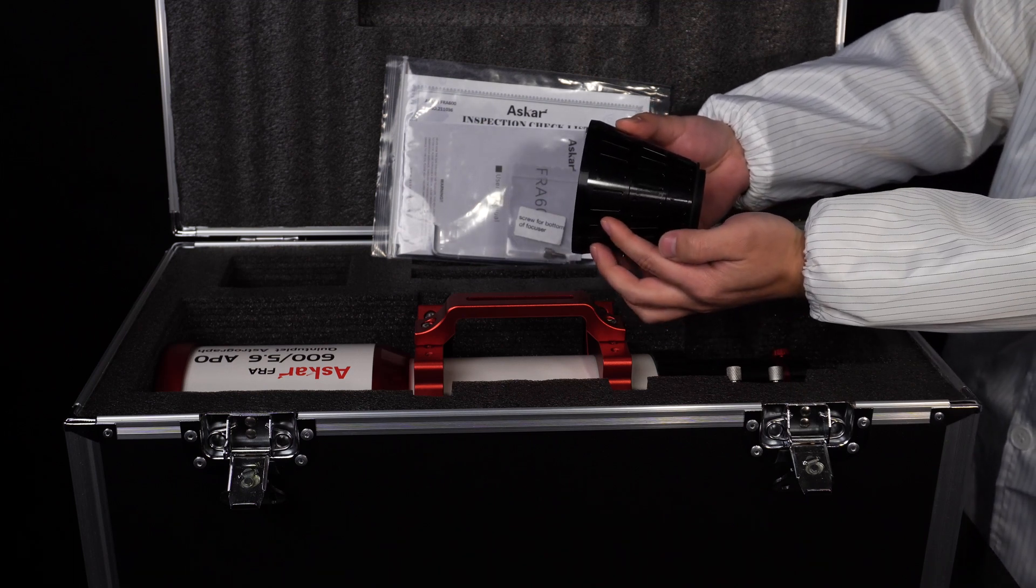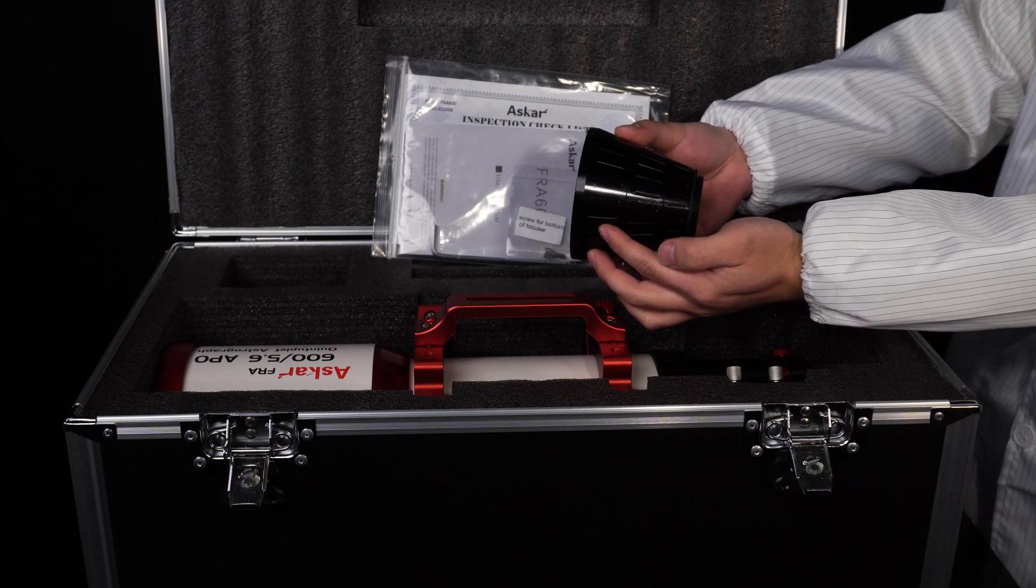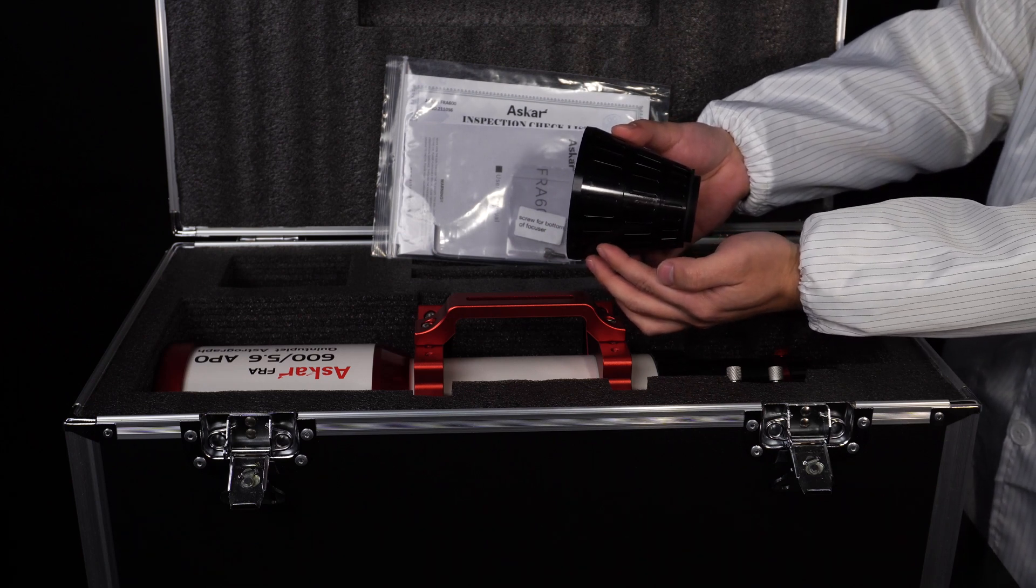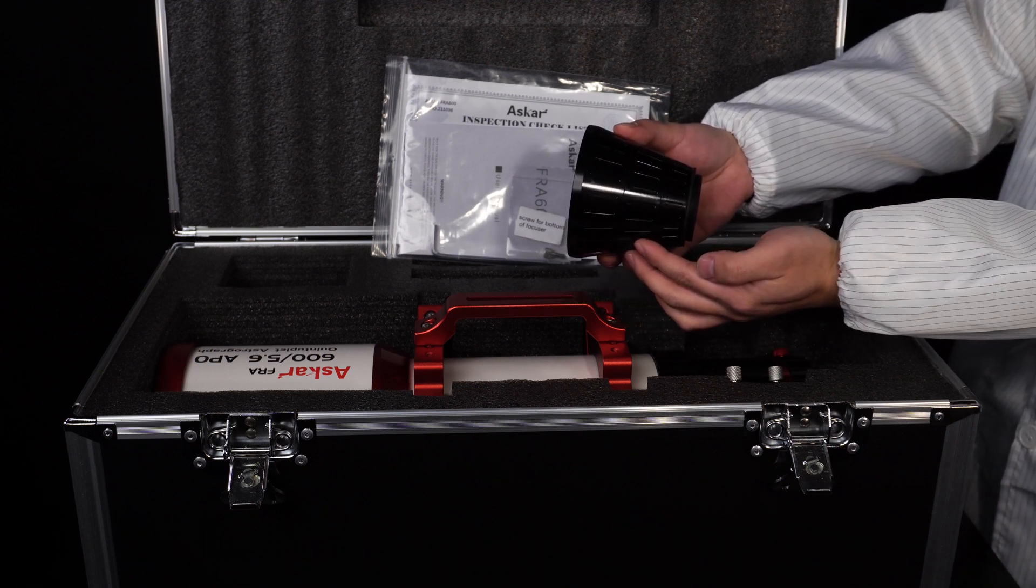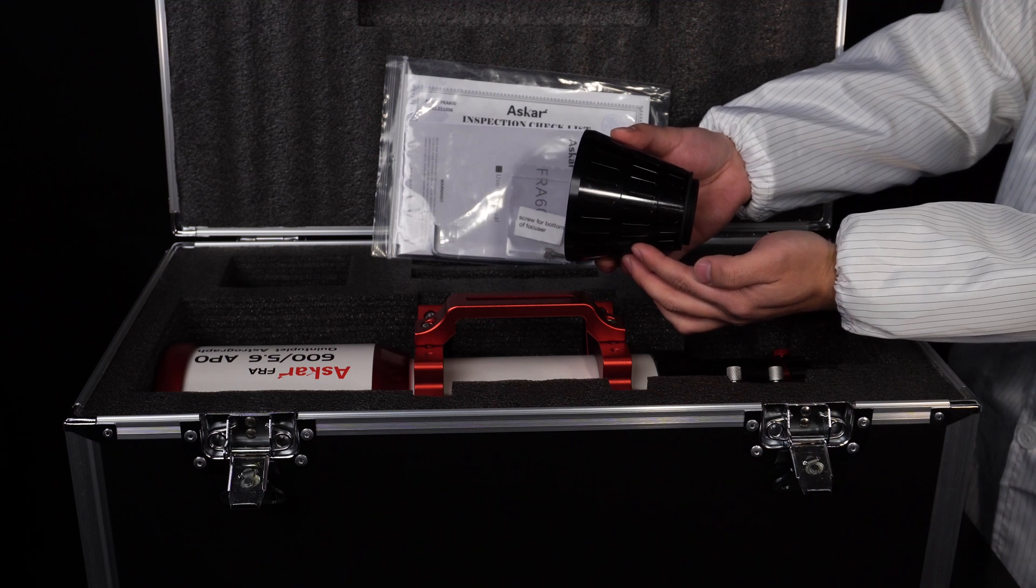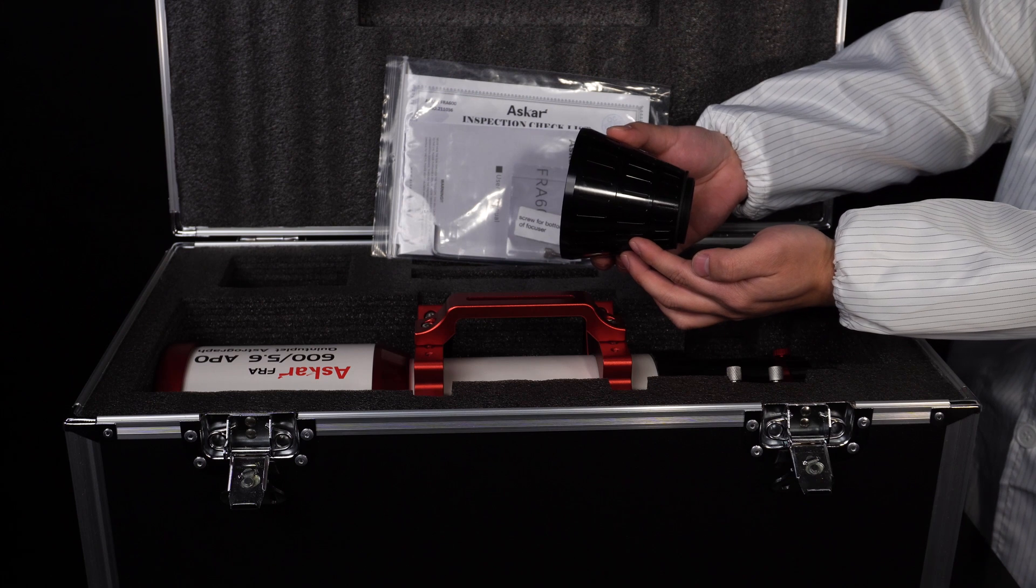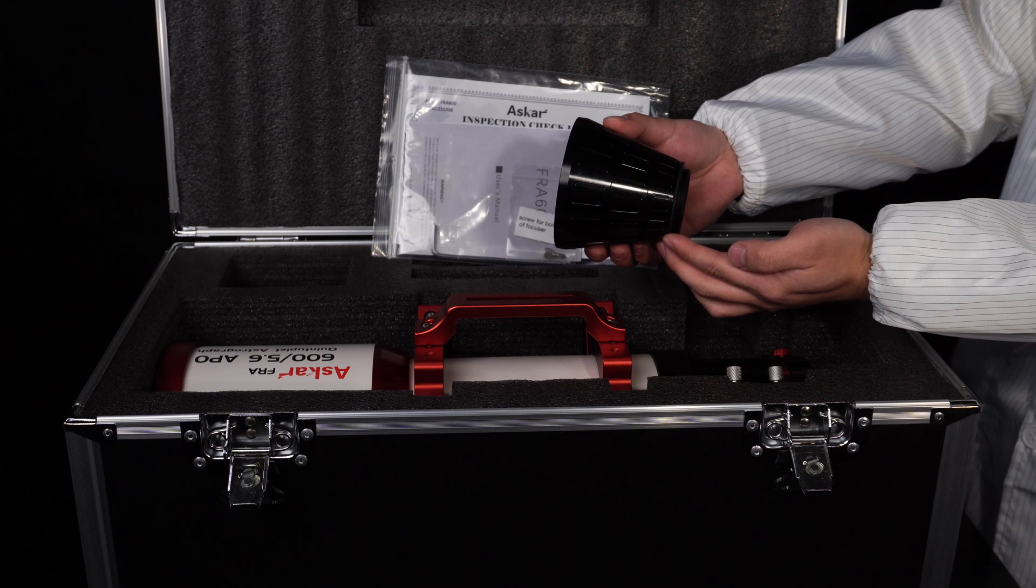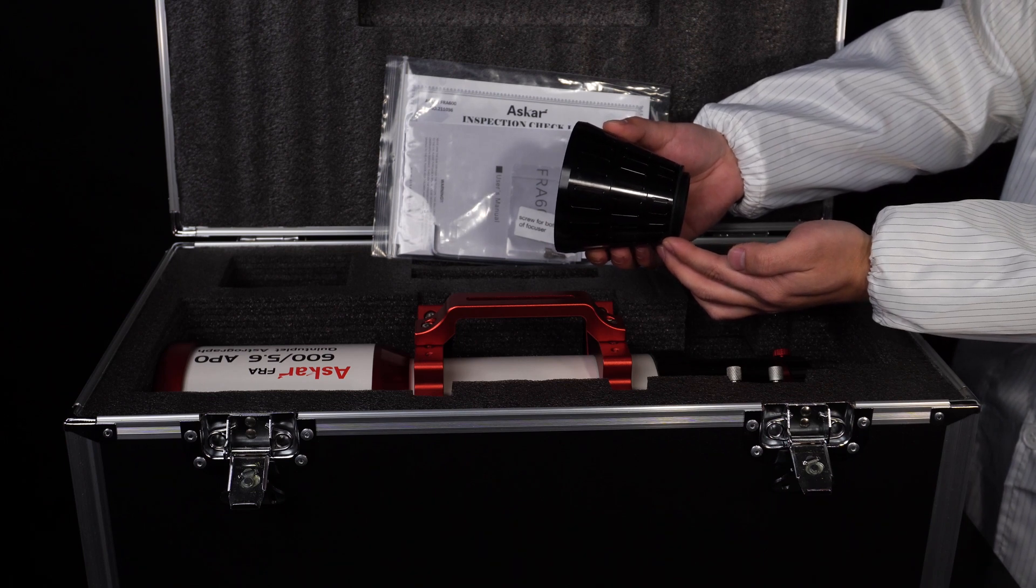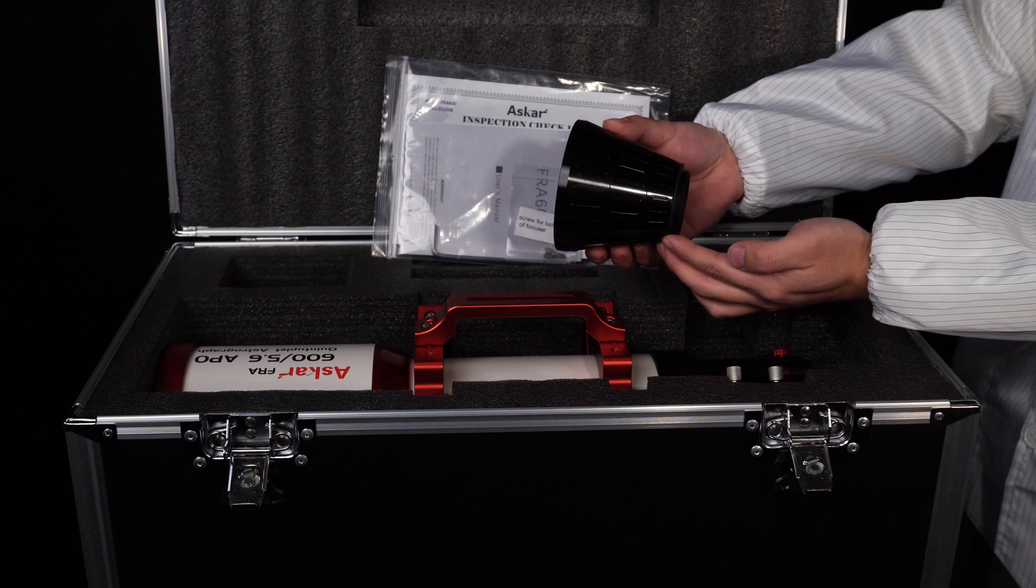This is the M68x1, which fits many astrograph accessories like two-inch electric filter wheels. And this is the M54x3. We will later illustrate how to use this part of adapter to attach an astronomy camera to the astrograph. And this is the M48x3-4, which accommodates astronomy cameras, DSLR cameras with the same thread type, as well as two-inch filters.